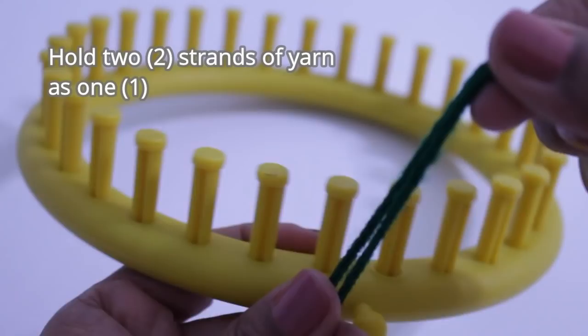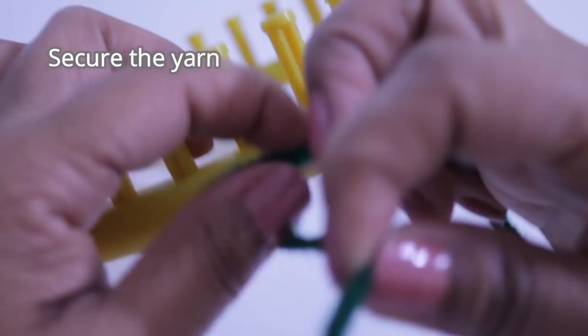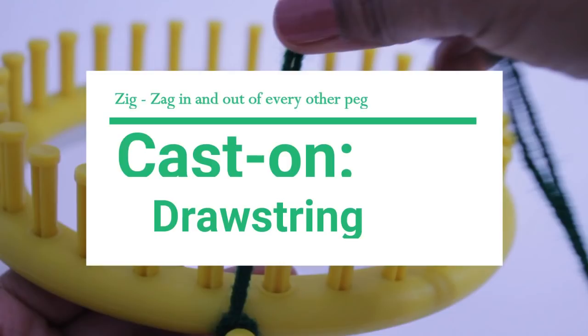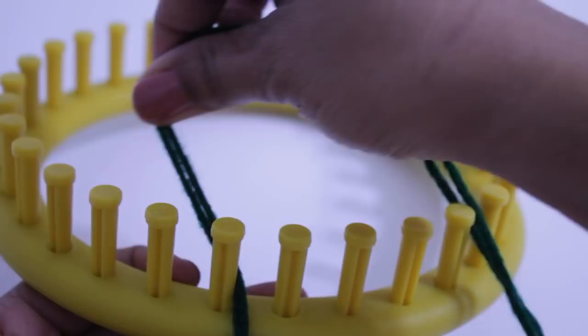We're gonna be knitting with two strands of yarn held together as one. Secure those two strands to your anchor peg. I'm gonna use a basic knot. You can use a slip knot if you're more comfortable. And now we're ready for the cast on.